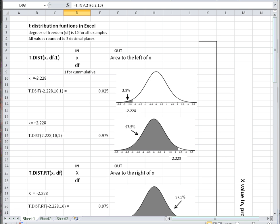The basic function is T.DIST, which gives you the area to the left of a value of x or t. The input is the x and the degrees of freedom and 1 for cumulative. In all of these examples, the degrees of freedom is 10.